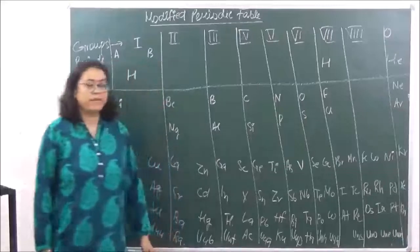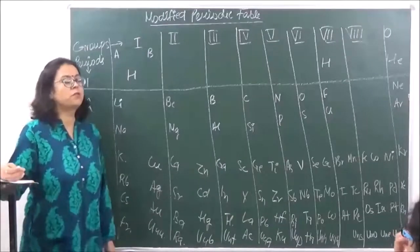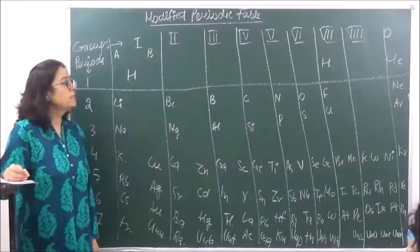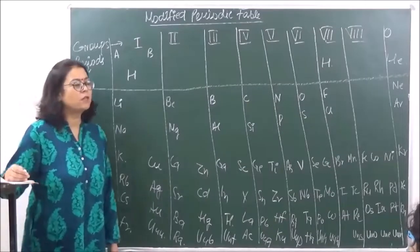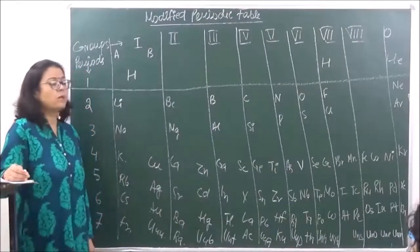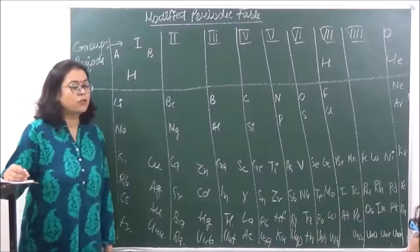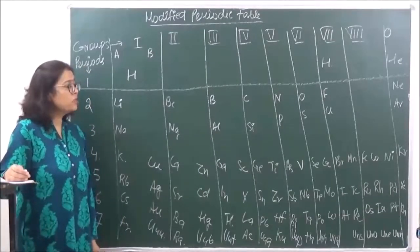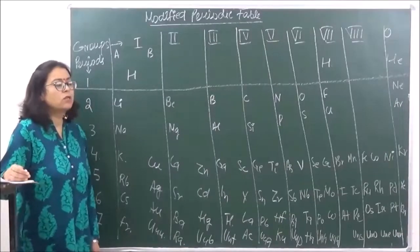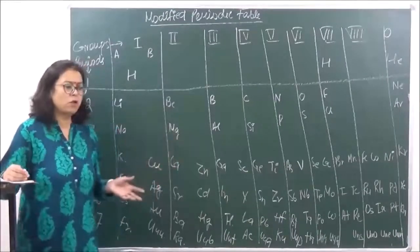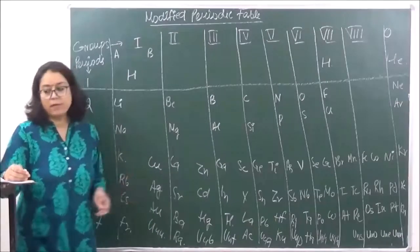Today we are going to discuss the modified periodic table. The table we discussed in the last lecture was the first periodic table given by Mendeleev on the basis of atomic masses. He said that properties are a function of atomic masses, but later Moseley put forward that properties are a periodic function of atomic numbers and not atomic masses. On the basis of this concept, known as the modern periodic law, the modern periodic table was designed based on Mendeleev's table, but the difference was that atomic numbers were used instead of atomic masses.